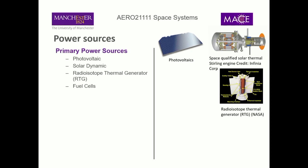The radioisotope thermal generator, or RTG, is quite common for certain missions. When might it be used? For interplanetary missions — if you wanted to send something out to Mars, you might still use solar power there, but as you get further from the sun the energy dissipates over a bigger surface area following an inverse-square law, so you're collecting less energy for a given area of solar panel the further you get.